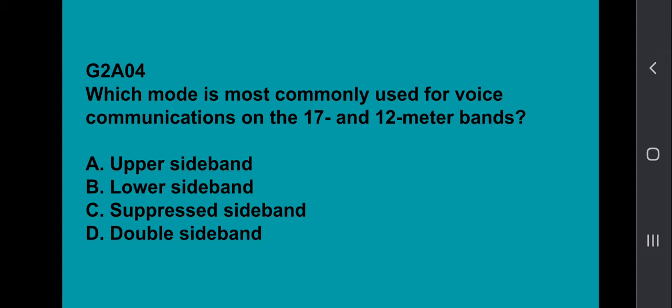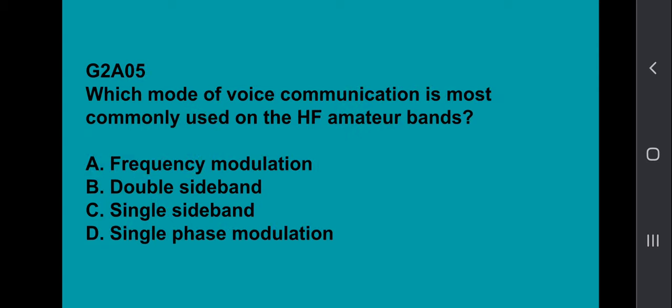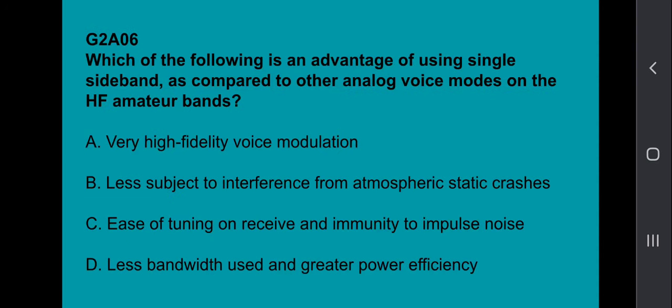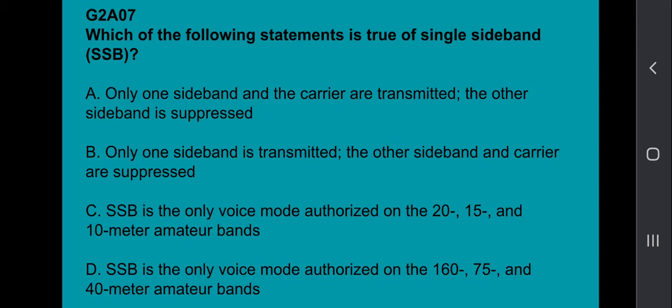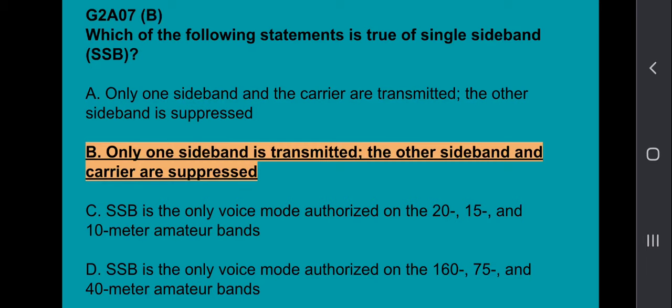G2A04: Which mode is commonly used for voice communications on the 17 and 12 meter bands? Upper sideband. G2A05: Which mode of voice communication is most commonly used on HF amateur bands? Single sideband. G2A06: Which of the following is an advantage of using single sideband as opposed to other analog voice modes on the HF amateur bands? Less bandwidth used and greater power efficiency. G2A07: Which of the following statements is true of single sideband (SSB)? Only one sideband is transmitted; the other sideband and carrier are suppressed.